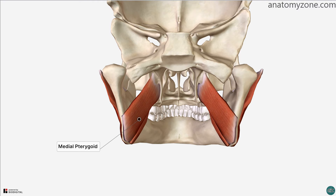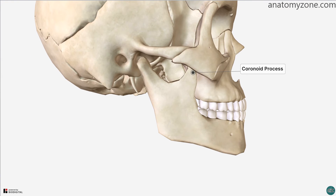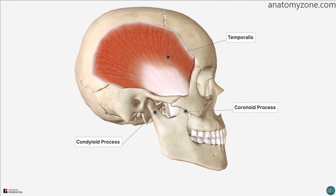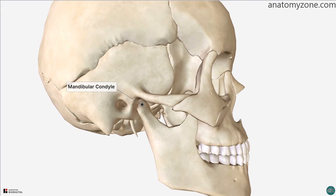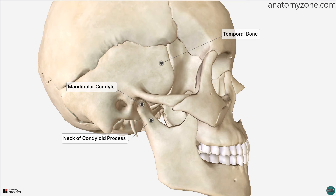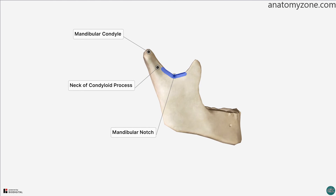There are two bony processes arising from the mandibular ramus: the coronoid process and the condyloid process. The coronoid process is a thin, flat eminence arising anteriorly and provides attachment for the temporalis muscle. The condyloid process is thicker and consists of the mandibular condyle and the mandibular neck. The mandibular condyle articulates with the temporal bone at the temporomandibular joint. Separating these two processes is the mandibular notch, a concave semilunar depression which is traversed by the masseteric vessels and nerve.